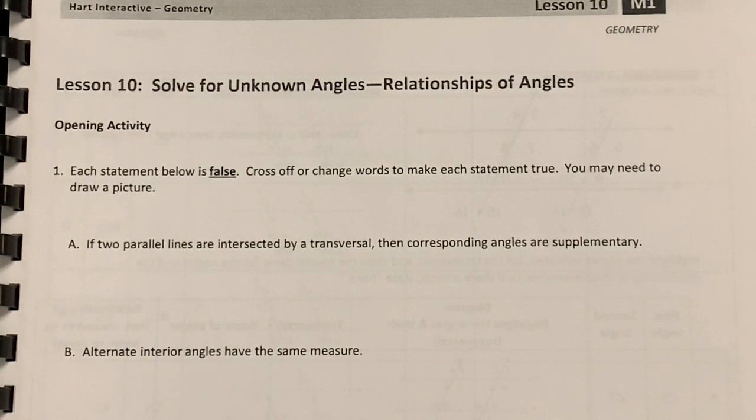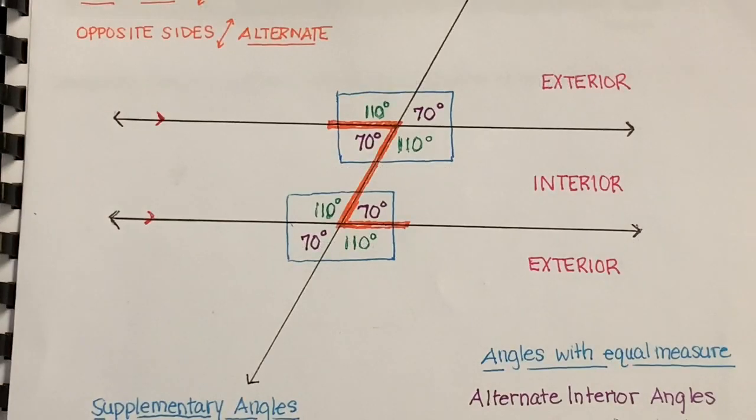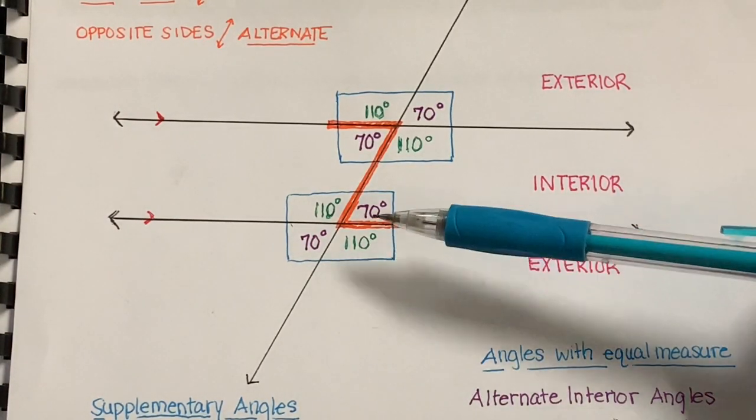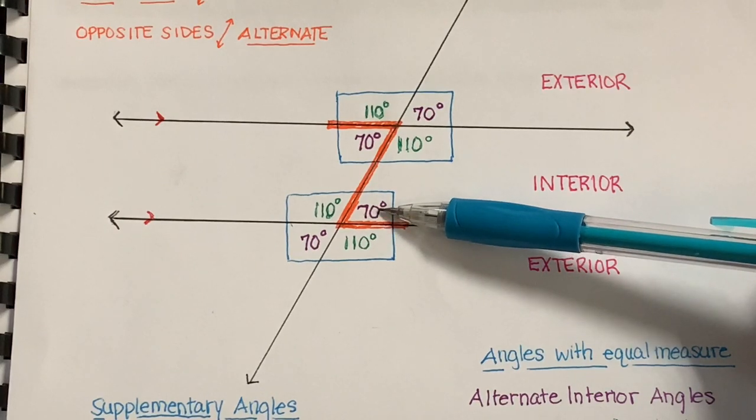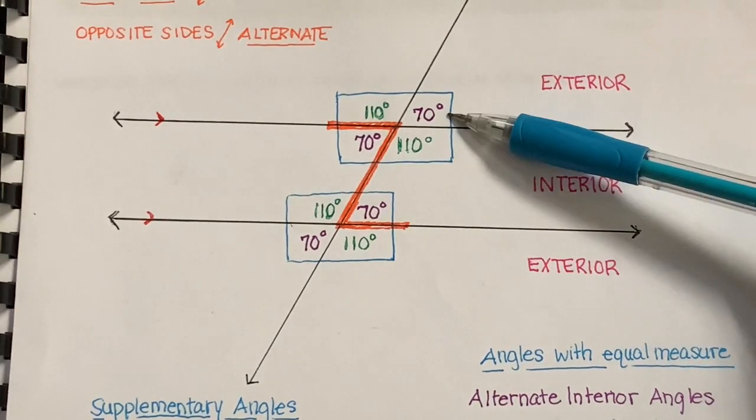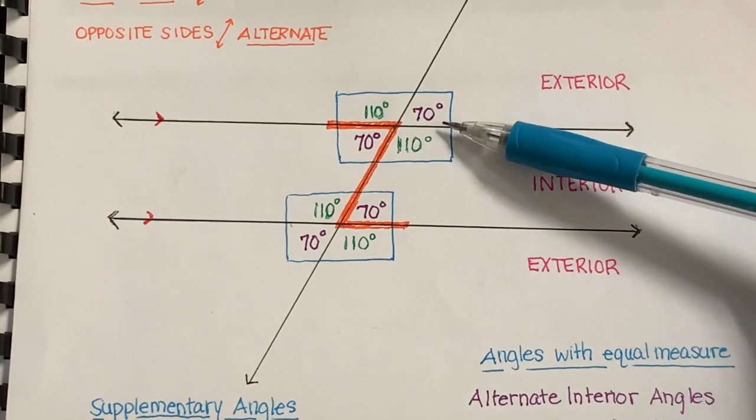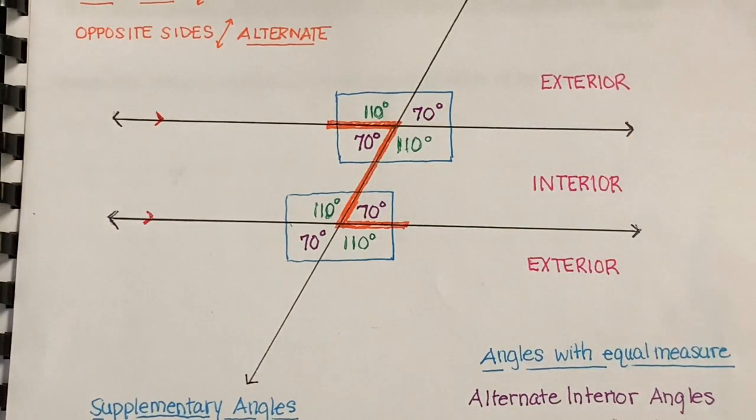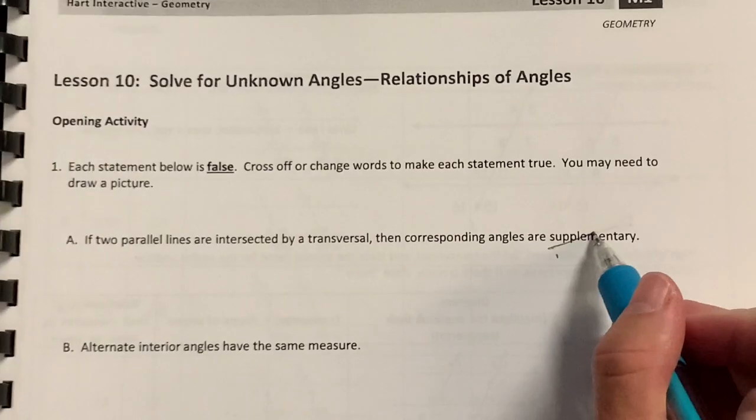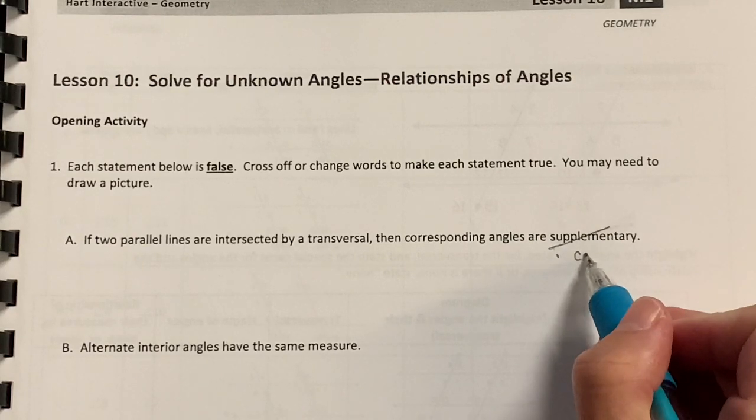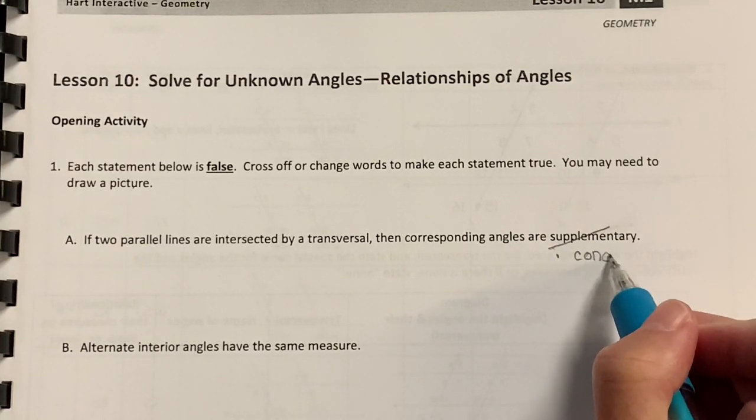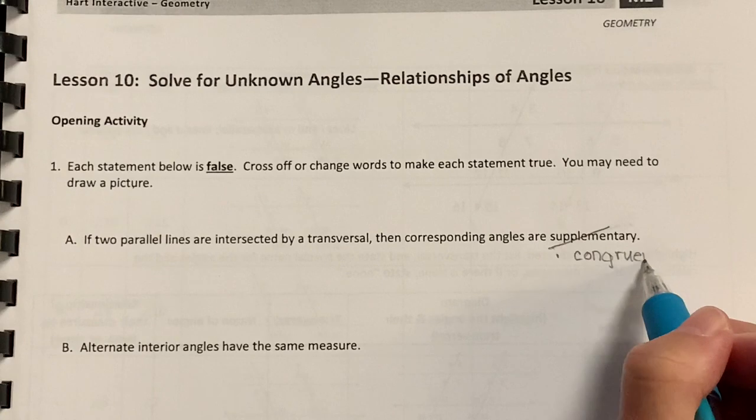The first one says if two parallel lines are intersected by a transversal, then corresponding angles are supplementary. Let's take a look at our reference sheet. An example of corresponding angles would be 70 degrees here and 70 degrees here. These are corresponding angles. Those look to me to be congruent, not supplementary. So let's go ahead and cross out supplementary and write in congruent to make this a true statement.